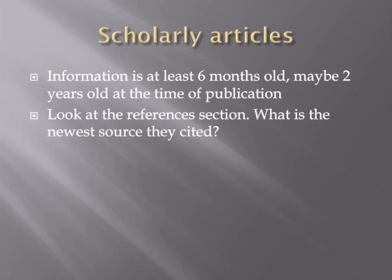Next let's talk about scholarly articles. Scholarly articles are peer-reviewed, which is a heavy-duty form of quality control. Because of that, they are expected to have fewer mistakes and errors. But on the other hand, they take much longer to get to the reader. Information in a scholarly article is typically between six months and a year old by the time it gets to the reader. In some cases, it may even be older than that.